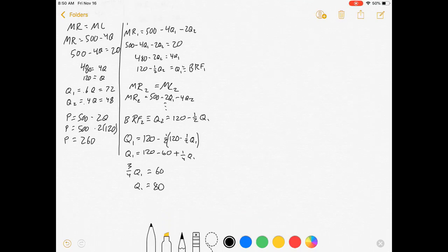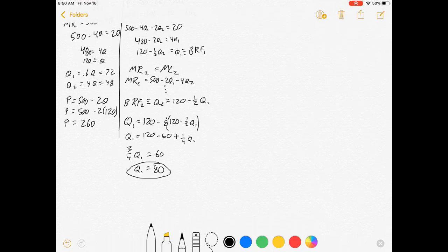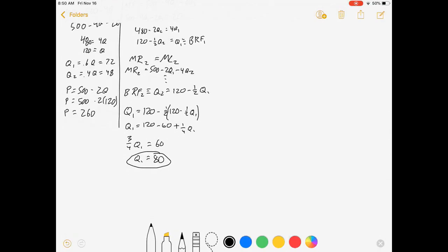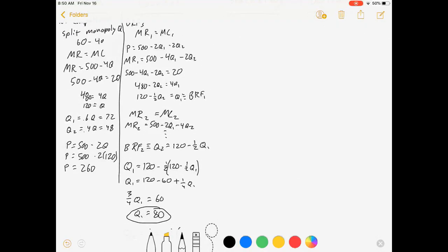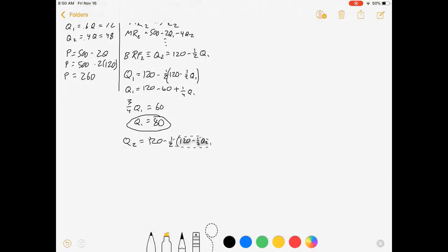Now I want to solve for Q2. I would take the best response for Q2, which is 120 minus a half of Q1, and borrow my Q1's best response and plug it in there. I'm going to get the same thing, that Q2 is equal to 80. If they had different costs they would have different quantities, but they're symmetric so it doesn't matter.